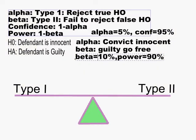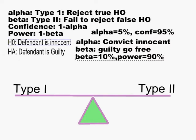Thinking about what goes on in a trial: alpha is rejecting a true null hypothesis, beta is failing to reject a false null hypothesis, confidence is 1 minus alpha, and power is 1 minus beta. In a criminal trial, you are supposed to assume the defendant is innocent until proven guilty — at least proven beyond a reasonable doubt. So the null hypothesis is that the person is innocent, and it is the burden of the state to reject that null hypothesis, to convince a jury that there's enough evidence to do so.